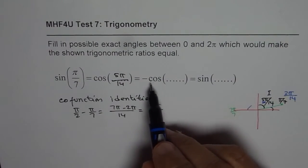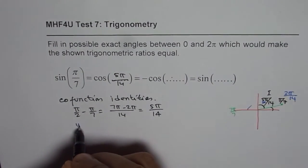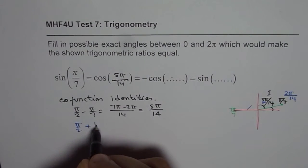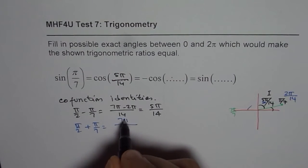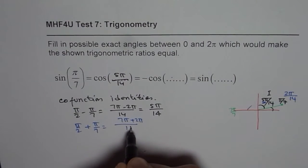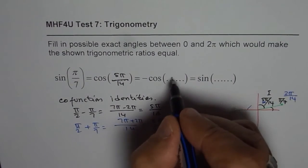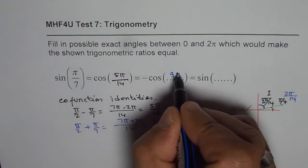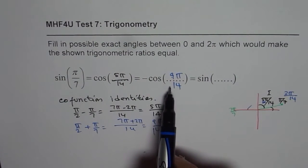Now, the second one is minus cos. That means now we are looking for a value which is actually π/2 plus π/7. So that will give us 7π plus 2π by 14, which is 9π/14. So this is 9π/14, correct? So that is how you can get co-function identities.